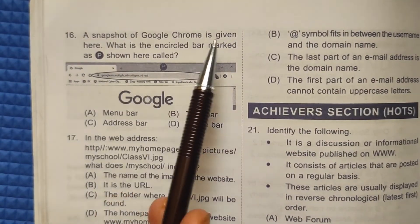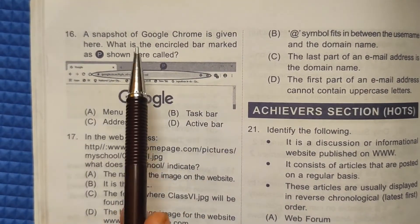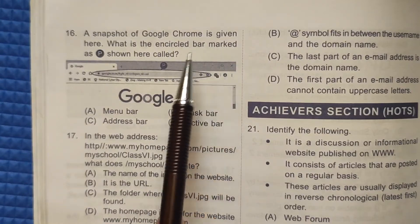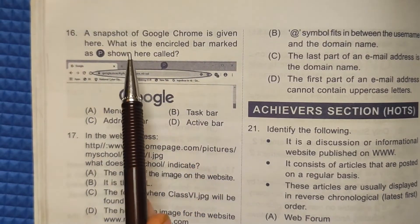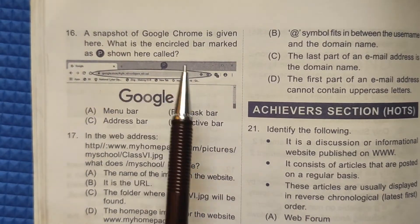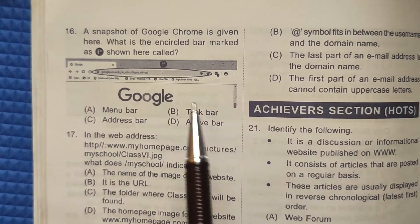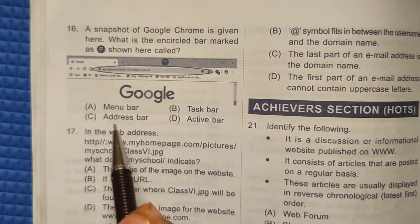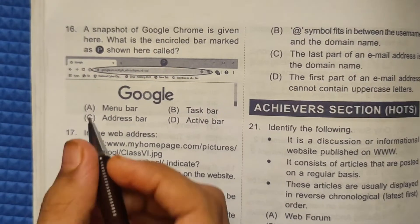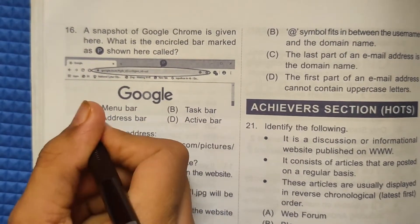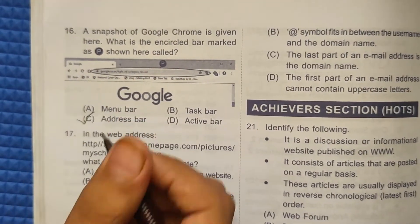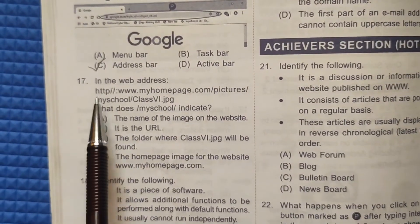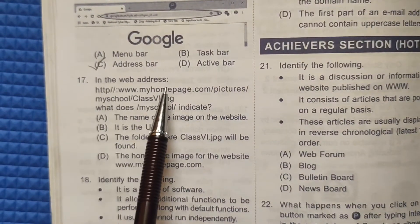Sixteenth question: A snapshot of Google Chrome is given. The encircled bar marked as P shown here is called — this is called the address bar. The correct answer is option C.